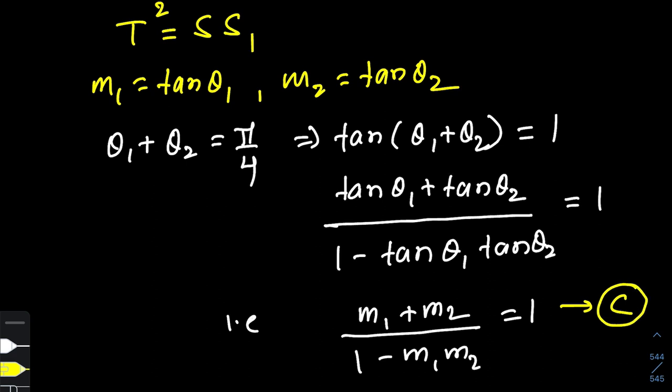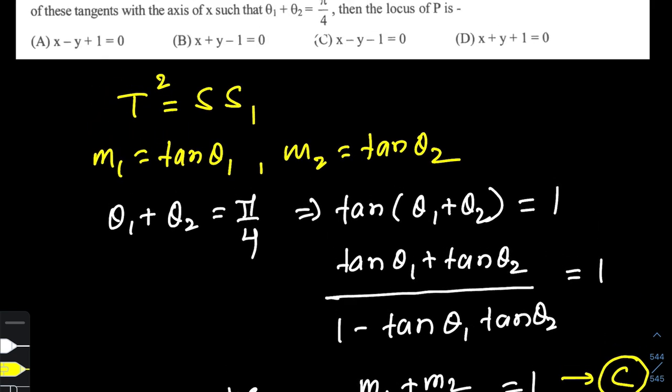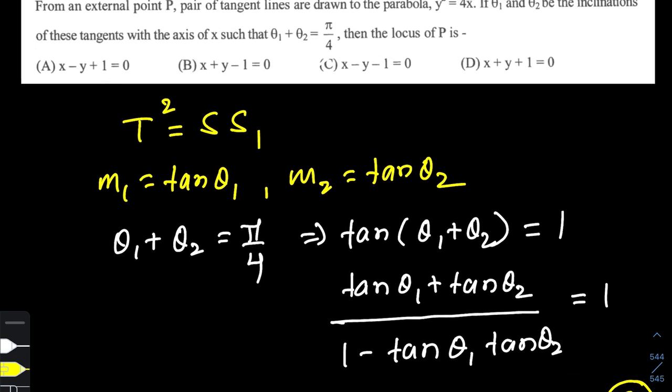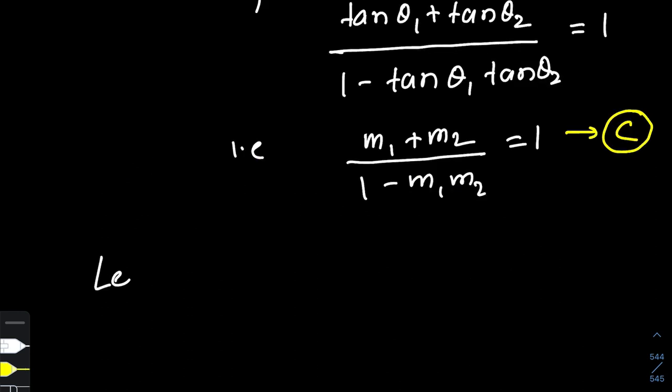Now let's move on to get the pair of tangents equation. Let us first assume the point P to be (h, k). What is T? When I am assuming point P to be (h, k), the T expression will be: yk - 2(x + h).